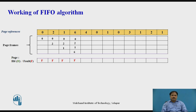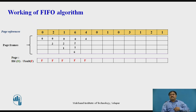In the next phase of execution, page 4 is required, but it is not in the main memory. The memory is already full from the previous cycle. The FIFO algorithm creates an empty slot by deleting the oldest frame — in this case page 0, which was brought in first. Page 4 is then transferred from secondary memory into that slot, replacing page 0. This transfer is shown in the figure, and the remaining frames are kept the same.